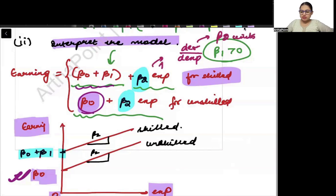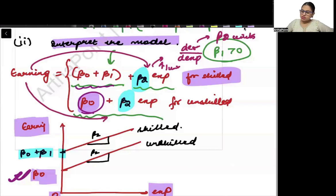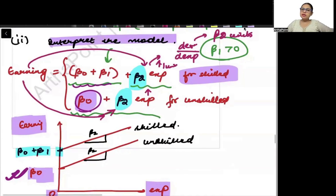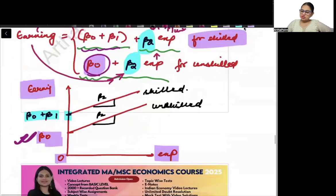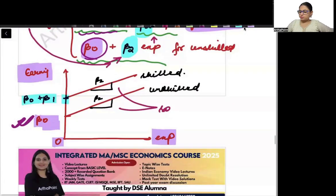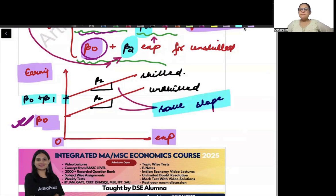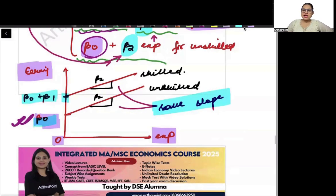When experience increases by one unit, earning will increase on average by beta 2 units. This holds for both equations, so both lines show that earnings increase by the same amount when experience increases by one unit. Therefore, we can say that the two lines have the same slope but different starting salaries, based on whether the worker is skilled or unskilled.